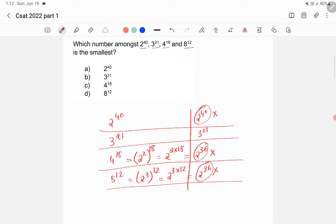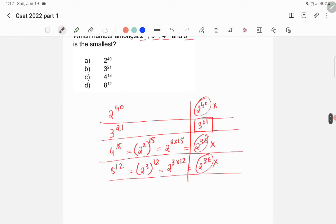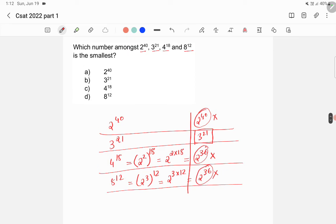So anyway, 2 raised to 40 is wrong, so we will get the answer as 3 raised to 21. So here option B is the right answer.